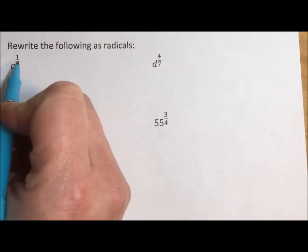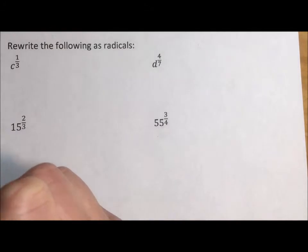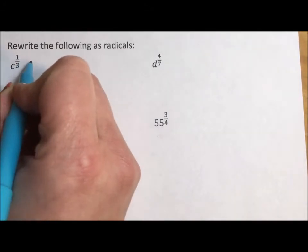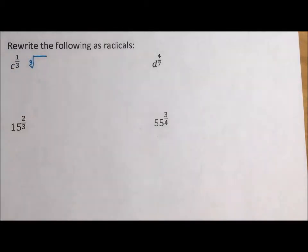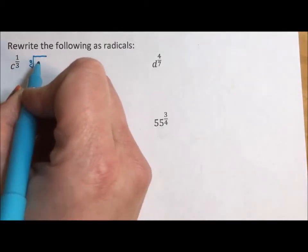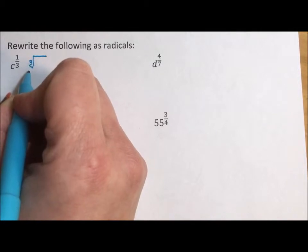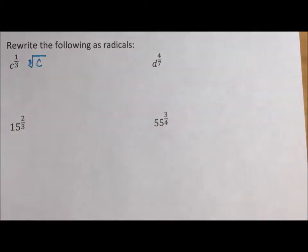So the denominator of the fraction, rational means fraction, the denominator tells us which radical we have. So that denominator, the three, that goes in the little v of the radical. So c to the one-third is the same as the cubed root or the third root of c.